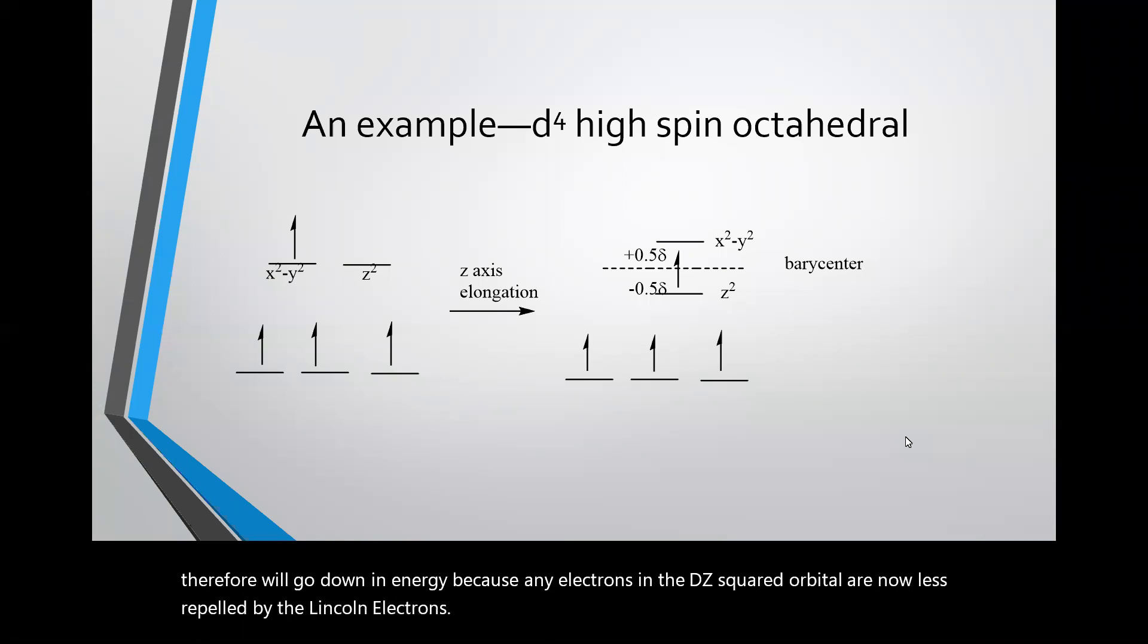Similarly, the dx²-y² orbital will go up in energy. But look at what happens to the total energy of those four electrons. More or less nothing happens to the three electrons that are in the t₂g set. But the fourth electron goes down in energy by -0.5 delta. In other words, that electron is less repelled by the ligand electrons. Therefore, the metal complex gains more stability through that distortion.